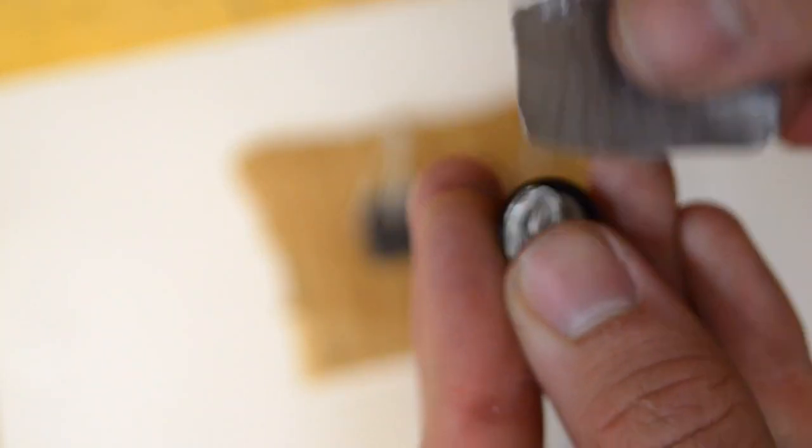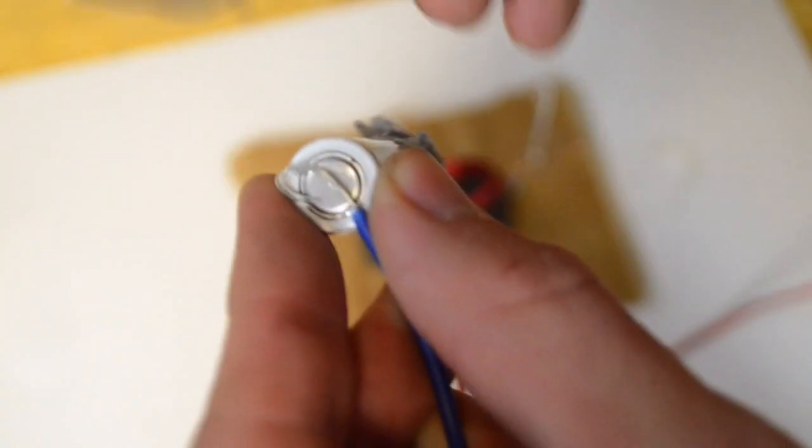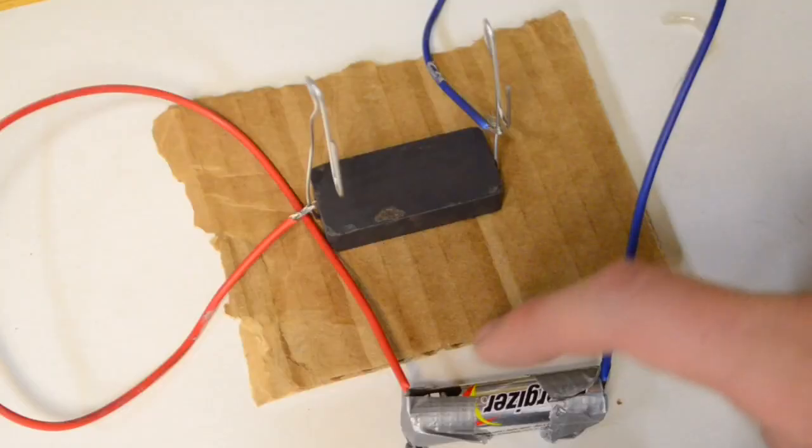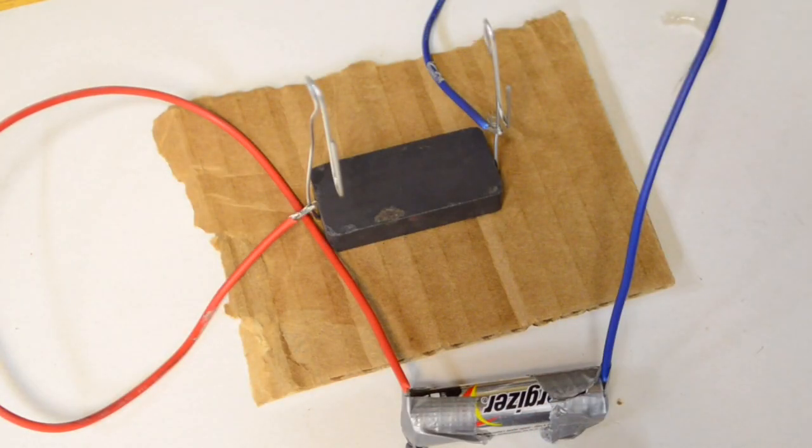Now take a AA battery just like this, and using tape, attach one wire to the positive side and attach another wire onto the negative side. And now attach each end from the battery onto each of the paper clips just like this.